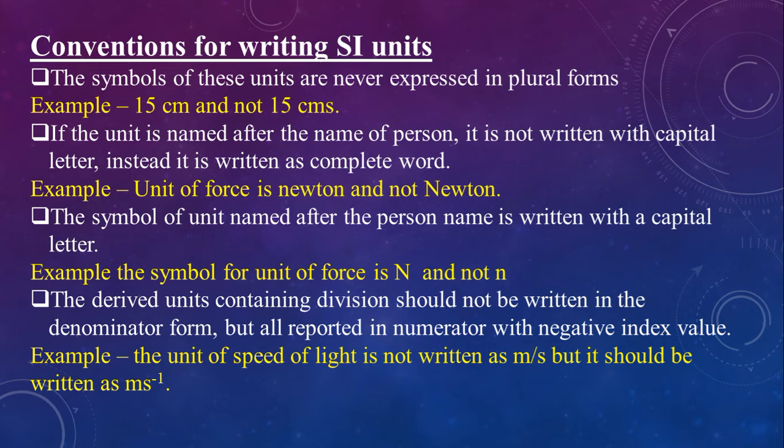This is something very interesting and usually up to school level we do not follow this. If derived units have anything written as denominator, denominators are not allowed in modern SI units. We have to write them with a negative index value as numerator only. Most common unit we use in science is meter per second for velocity. And look at the way it is written, meter s raised to minus 1.